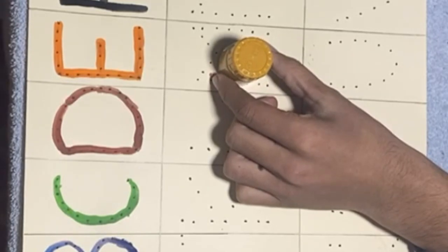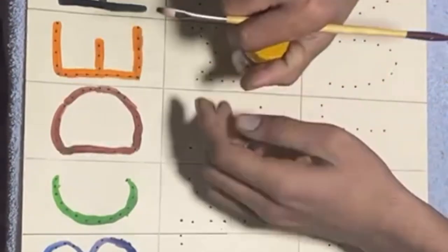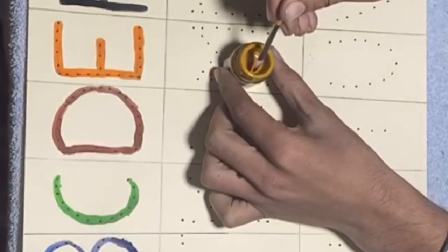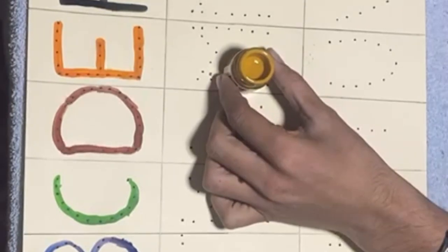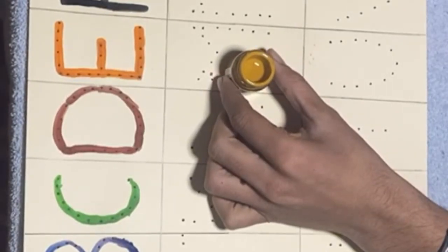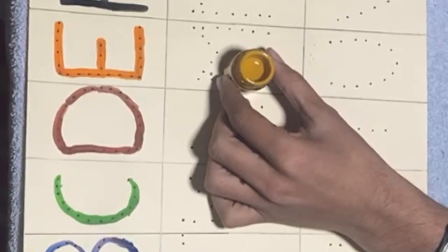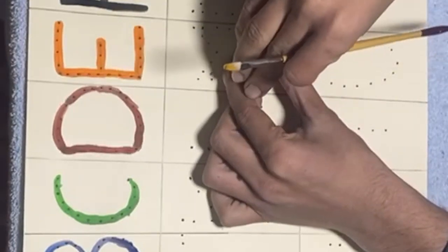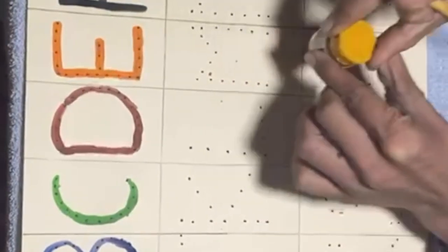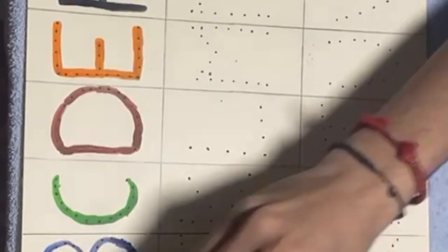And now we will color Letter G. G is for Grapes. G is for Grapes. And we are going to color the G letter with dark yellow. Very good. And this color is being done — Letter G. G is for Grapes. Let's spell it together: G-R-A-P-E-S. Grapes means Angoor. Very good, well done!